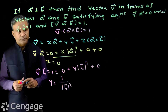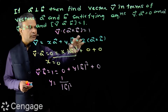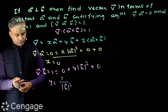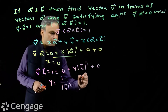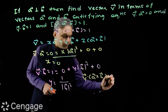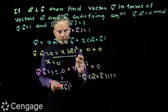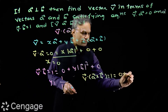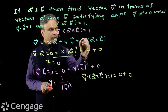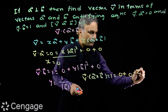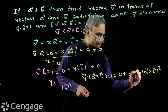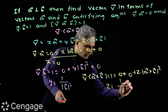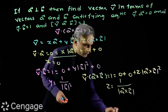To get the value of z, we use the equation v dot (a cross b) equals 1. For that we take the dot product with a cross b. We get v dot (a cross b), which is actually 1. This equals x into a dot (a cross b) — which is zero because two vectors are the same — plus zero, since b dot (a cross b) is also zero, plus z into square of modulus of a cross b. From this we get z equals 1 over square of modulus of a cross b.